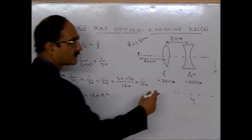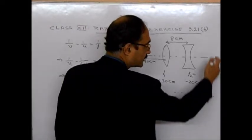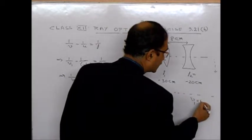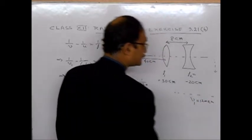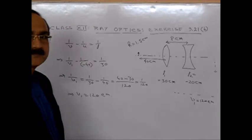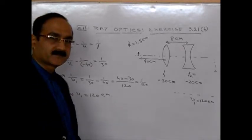That means V1 will be here, the image will be formed here, at the distance of 120 cm. This is for the first lens, convex lens.